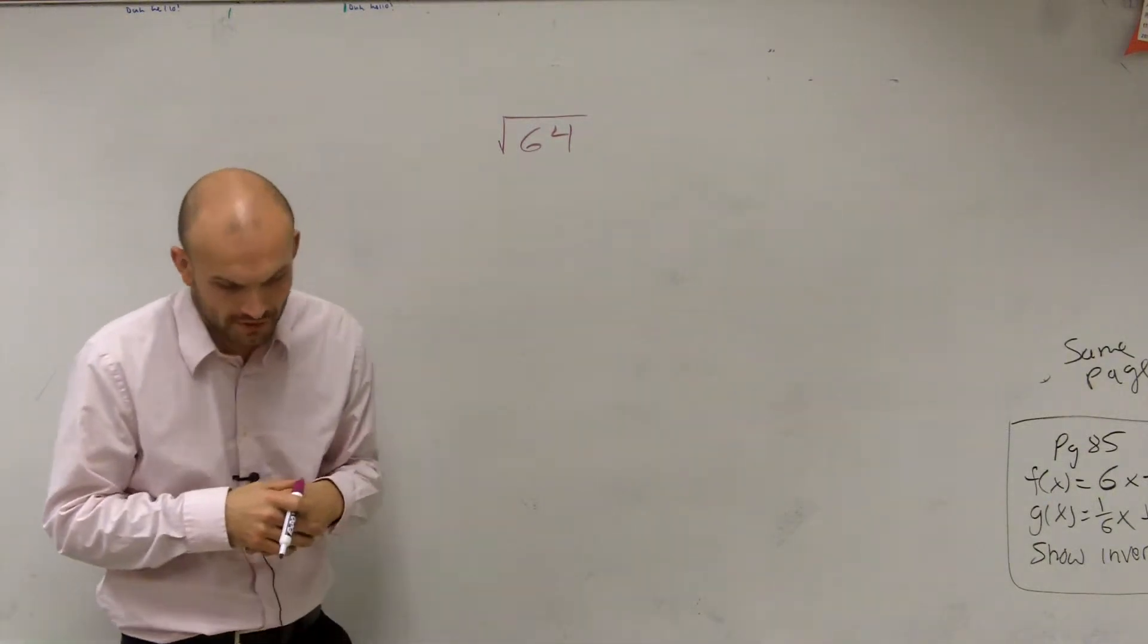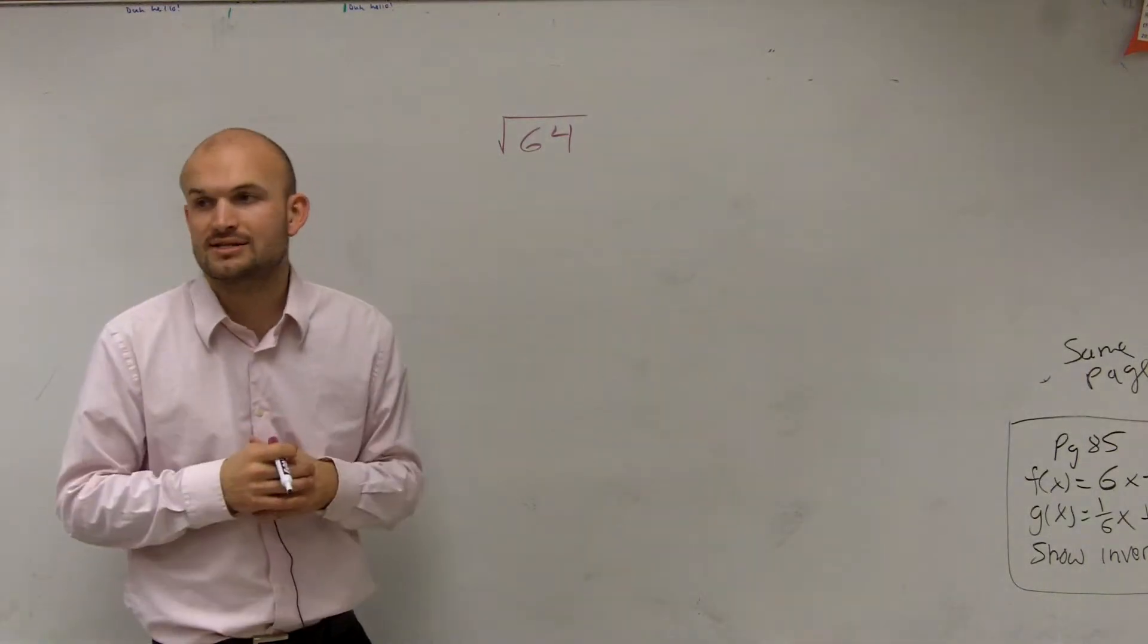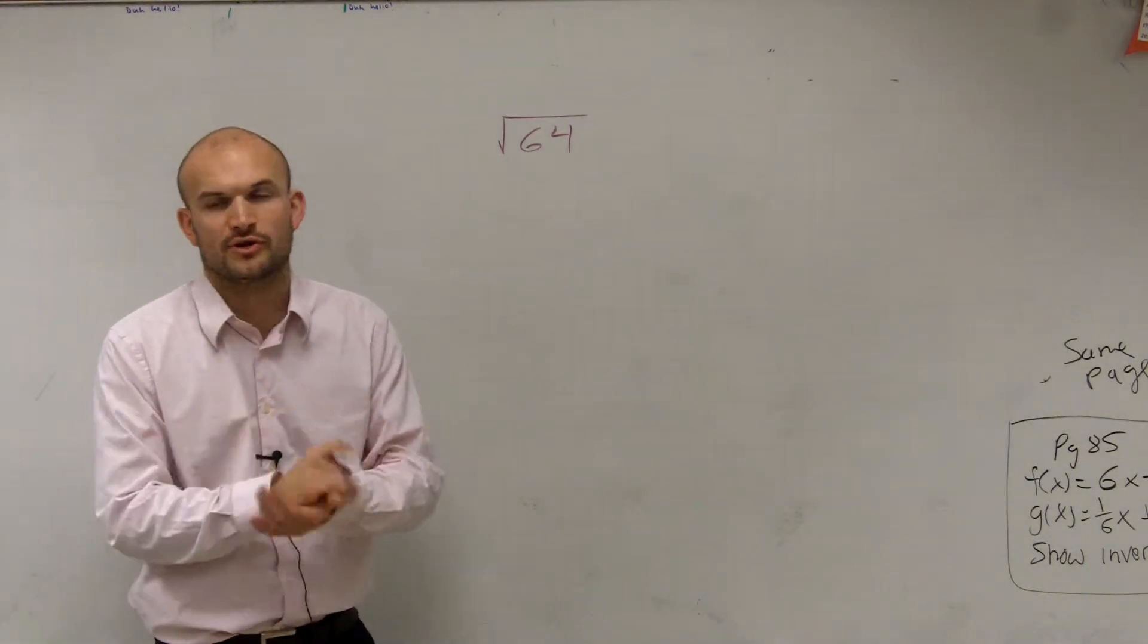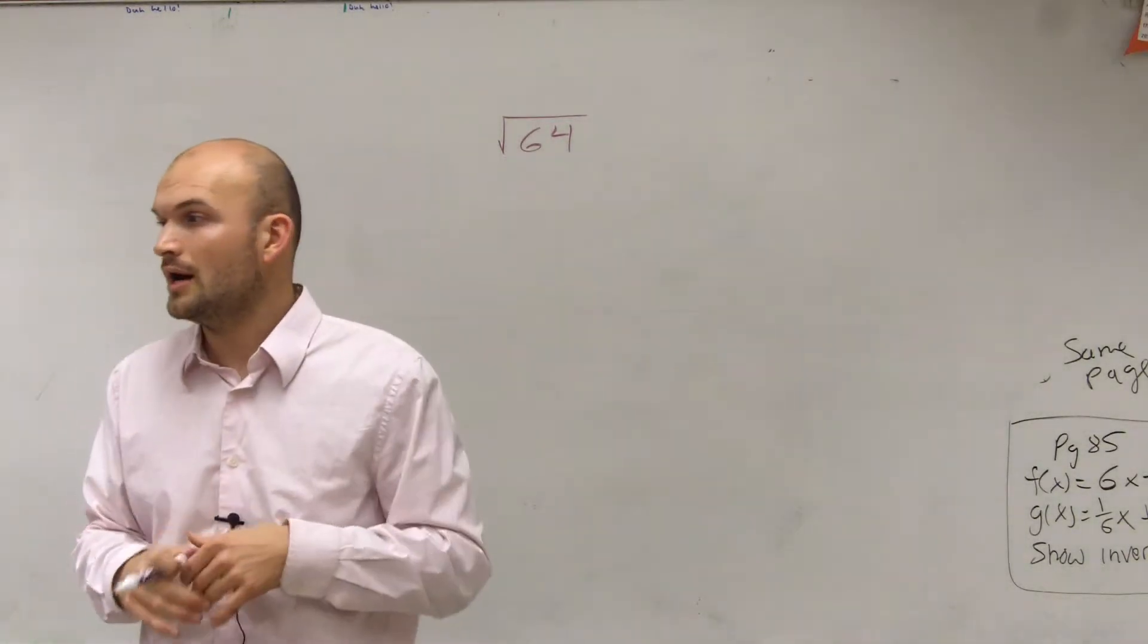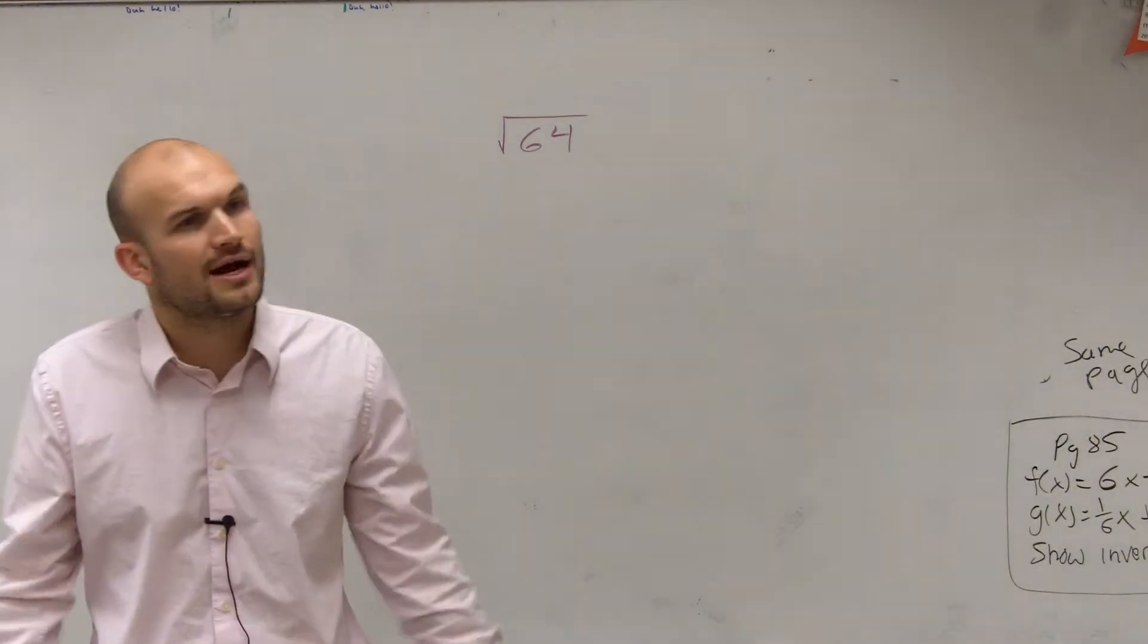We have the square root of 64. Some of you might say the square root of 64 obviously equals 8. Well, how do we know that? And how can we rewrite this?